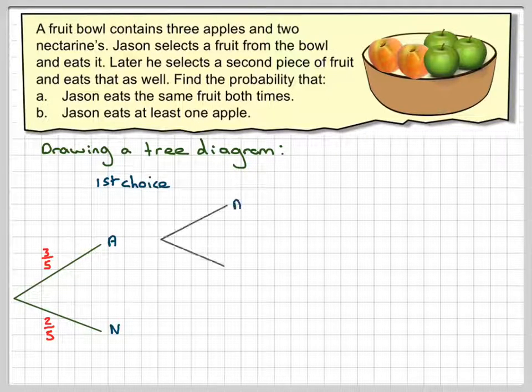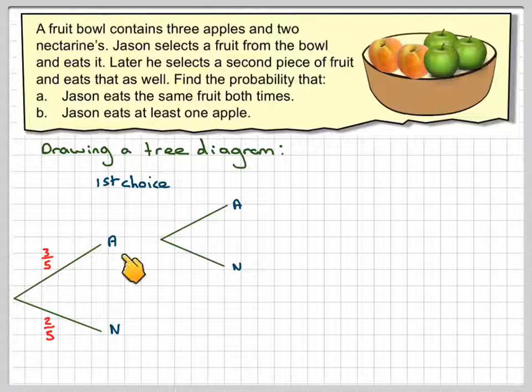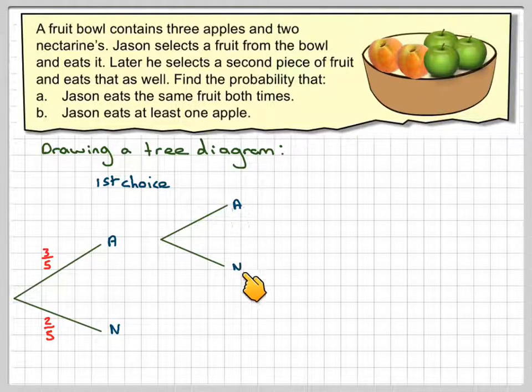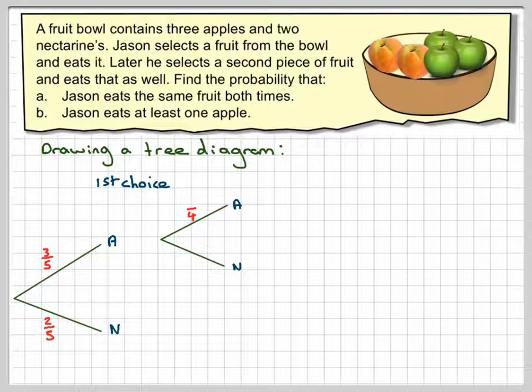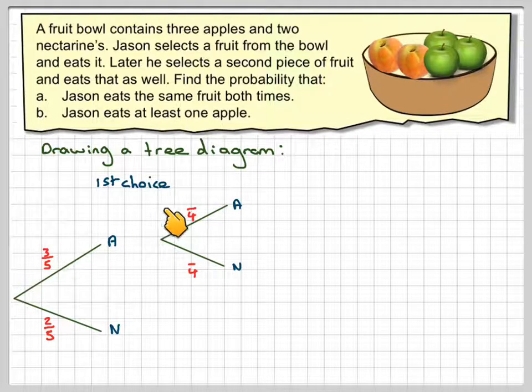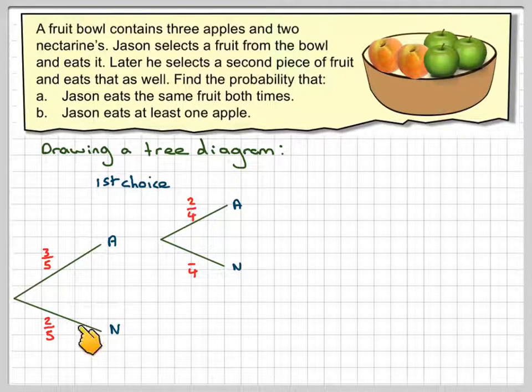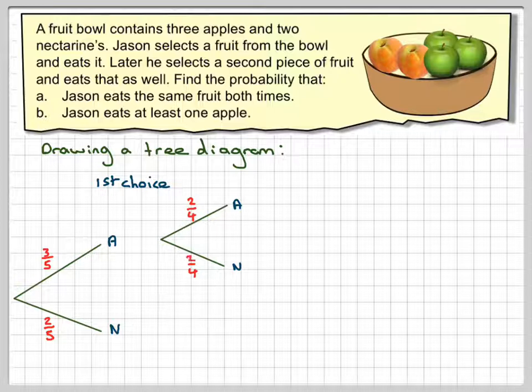Then he can choose a second. Having chosen an apple first, he could choose an apple the second time or a nectarine. However, there are now only four pieces of fruit in the bowl. He's already eaten one apple so this one will become two, but he still has two nectarines to choose from.